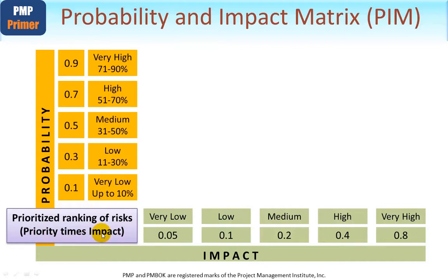Probability is shown on a scale of 0.1 to 0.9 — that is, 10% to 90%. We don't show 100% because 100% isn't a risk; it means it actually will happen, so it becomes an issue. These scales aren't arbitrary: the highest band runs from 71% to 90%, the next from 51% to 70%, and so on down to very low at up to 10%, with brief descriptions for each band.